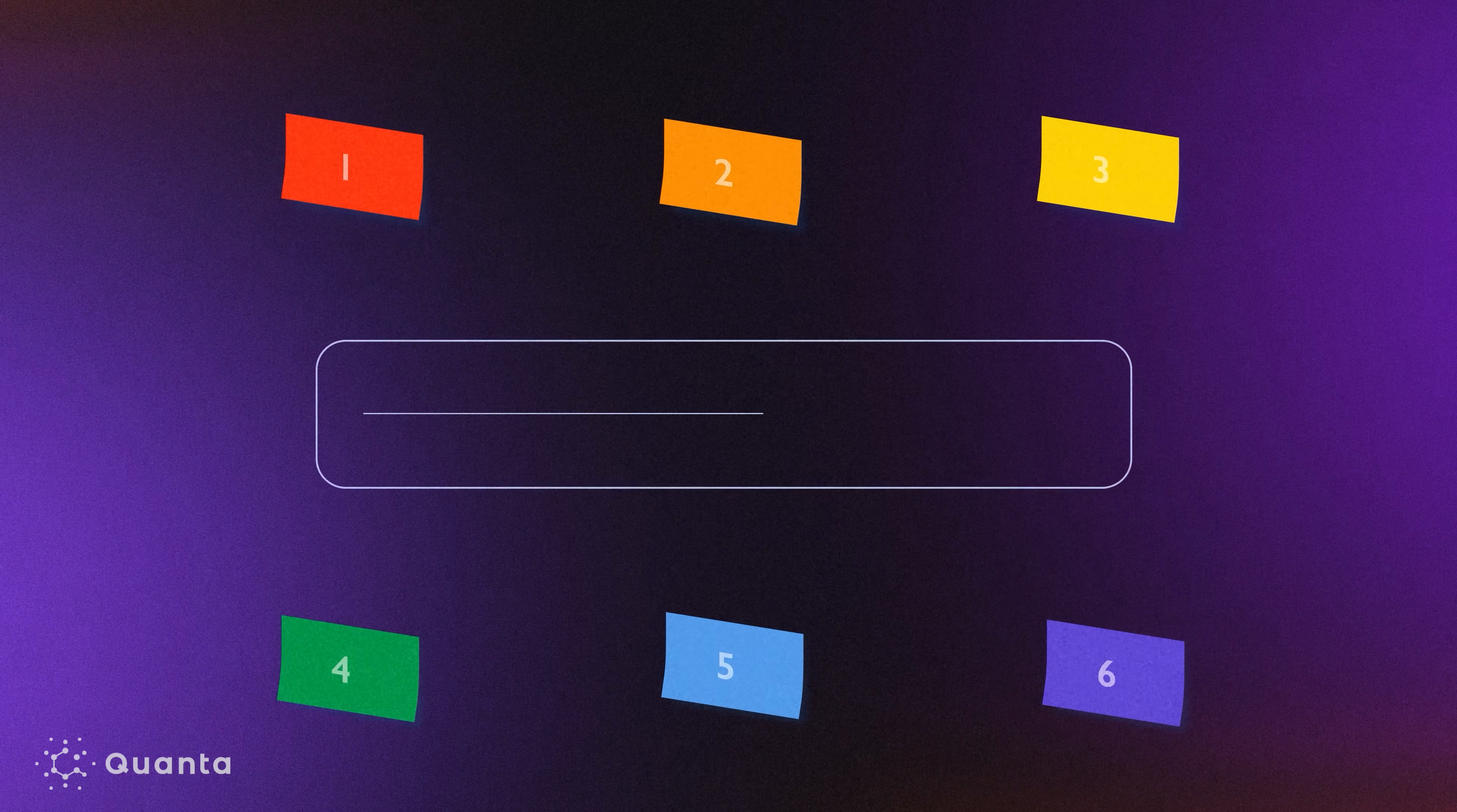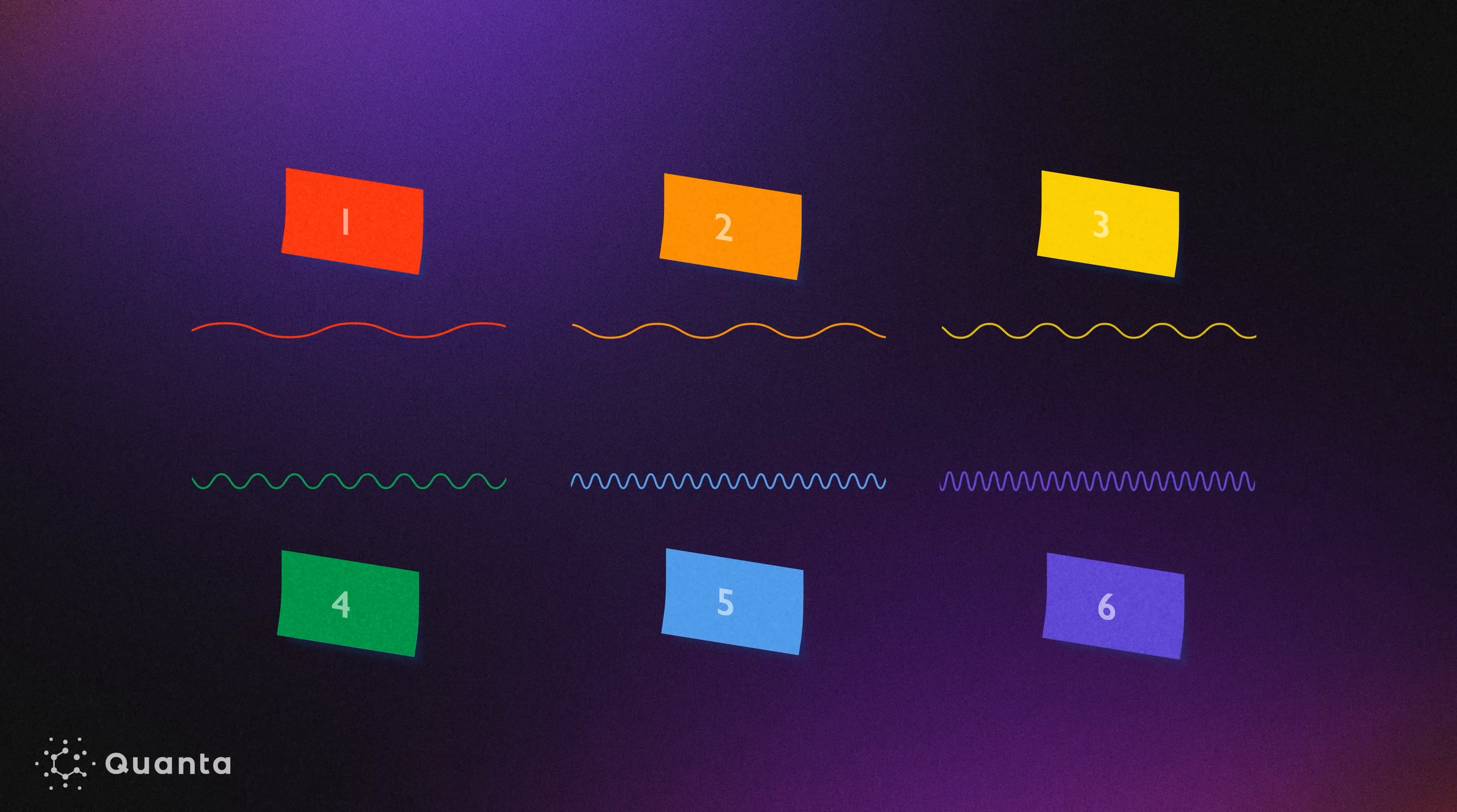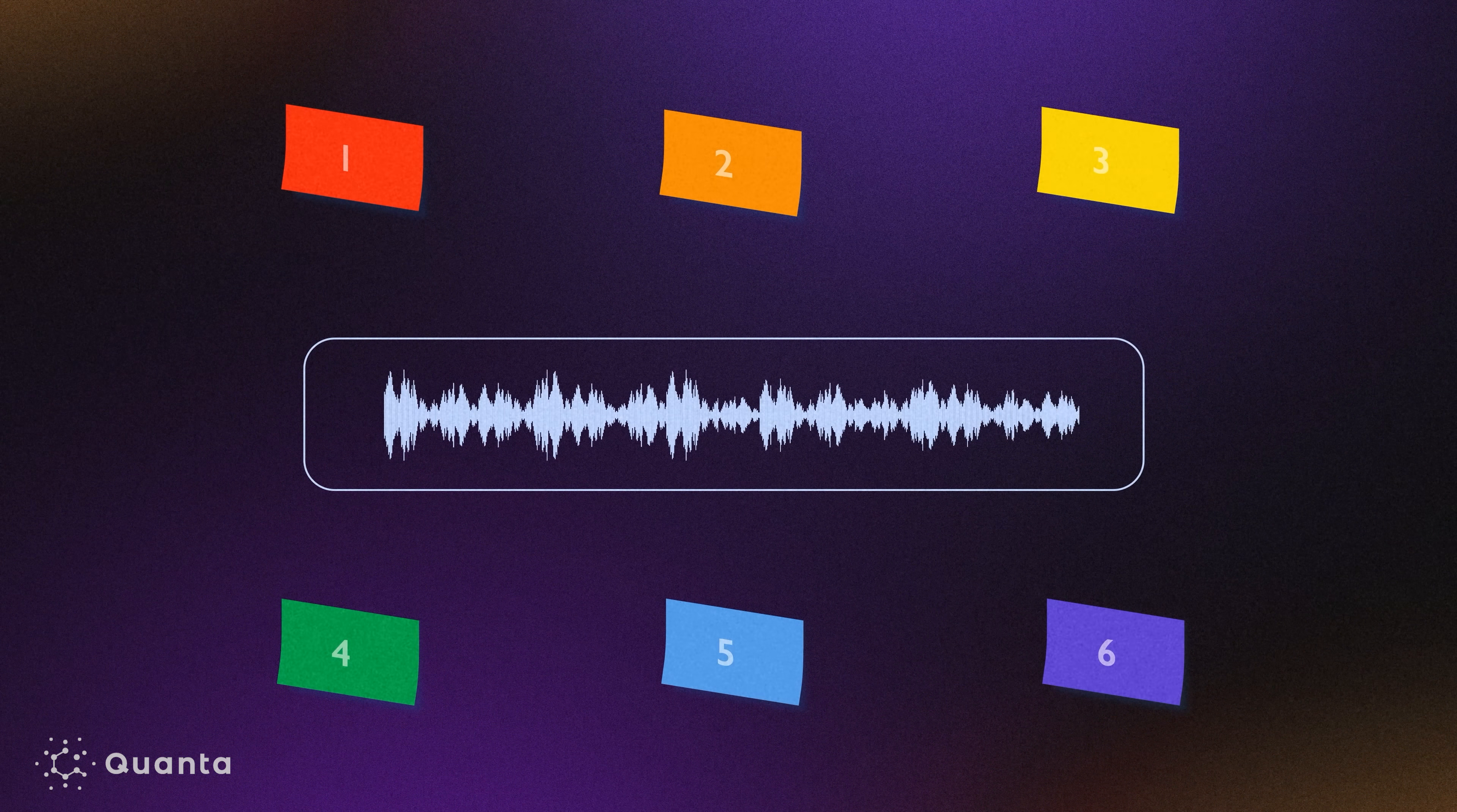For example, when you send a voice message, your phone doesn't transmit an entire complex sound wave. Instead, it breaks it down and sends just the labels, or frequencies of the component sine waves. The receiver's phone then reverses this process, converting the labels back into the contents of the bins to reconstruct the message's original sound wave.